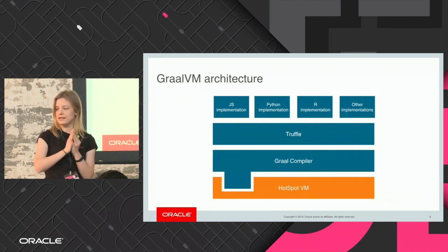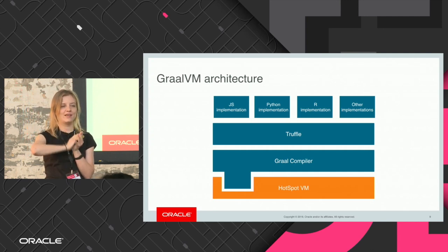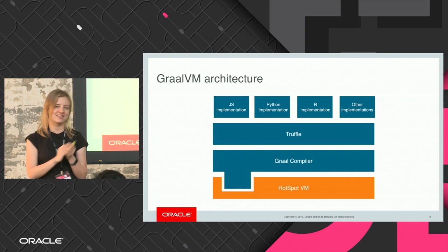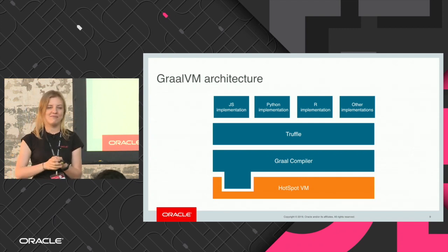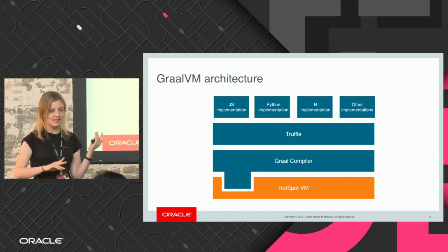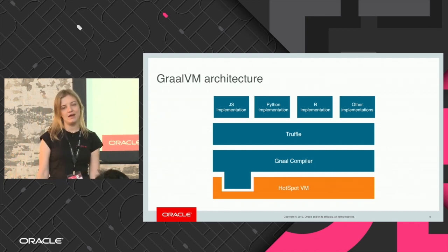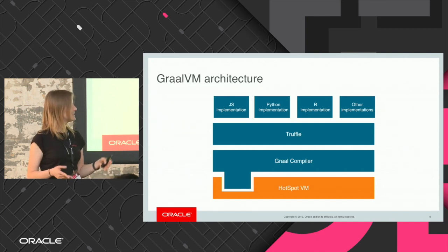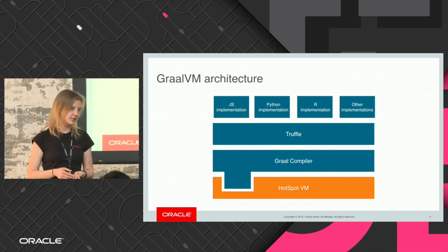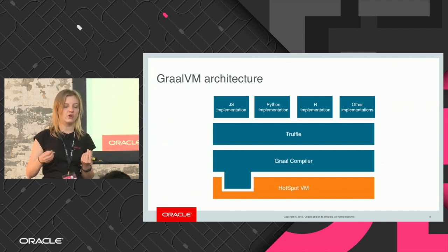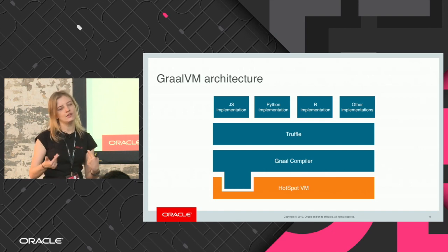Let's take a closer look at what's inside. How many of you have heard about GraalVM before? A lot of people — I'm really happy. And how many of you have tried using it? Not so much. I hope that maybe after this presentation a few more of you will try it. At the bottom here you can see your normal HotSpot VM, which is used as a platform, and you can see that the Graal compiler is kind of plugged into it. This became possible since Java 9 when JVMCI — JVM Compiler Interface — was introduced, which allows you to plug in an external compiler.